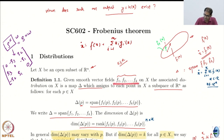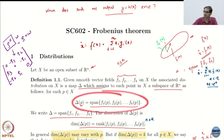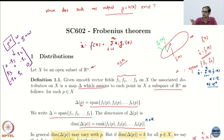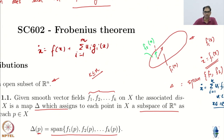If you have some k vector fields, then a distribution is basically assigning to each point this subspace — the span. If you have two vector fields and you take the span of F1 and F2, then basically you can get any vector in this plane.